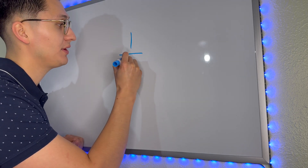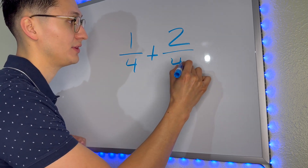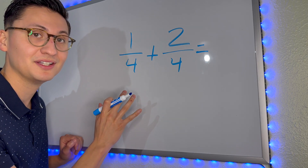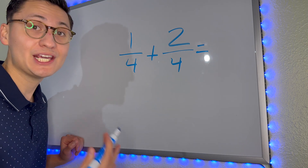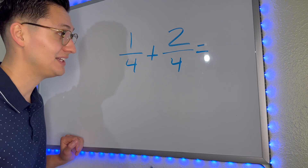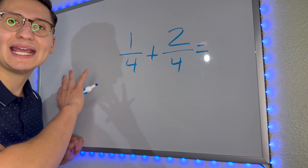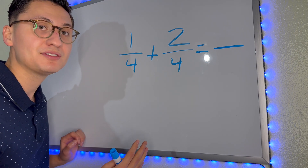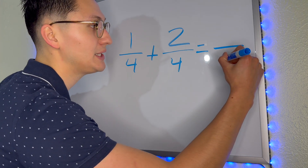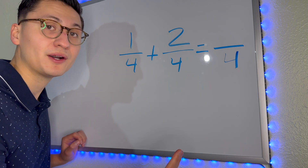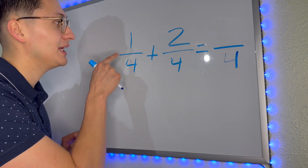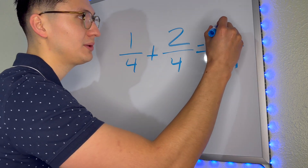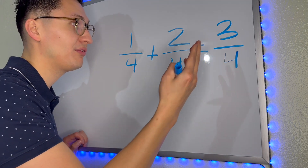Now we're going to go ahead and add one-fourth plus two-fourths. First thing we do, we look at the denominator — the number downstairs. Are they equal? Are they the same? Is four equal to four? Yes, it is. Then that means we can add. We don't have to do anything else. All we have to do is add across. And remember, when we're adding or subtracting fractions, the denominator never changes. So we already know the bottom number is going to be four. All that is left to do is add the numerator, the number on top. We look at the sign — we're adding. So one plus two equals three. Therefore, our answer is three over four, or three-fourths.